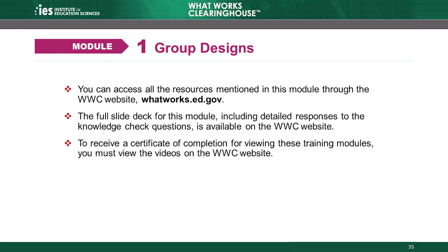This concludes our review of group designs, module 1 of the WWC's group design standards training. We discussed the two research designs eligible for review using the WWC group design standards: randomized controlled trials and quasi-experimental designs. We also reviewed how to identify eligible RCTs with well-executed randomization, as well as how to identify eligible QEDs. Up next in the training series, we will discuss the WWC's attrition standard in module 2. You can access all the resources mentioned in this module through the WWC website at whatworks.ed.gov. The full slide deck for this module is available on the WWC website, including detailed responses to the knowledge check questions. To receive a certificate of completion, you must view the videos on the WWC website. Thank you for viewing the group designs module.